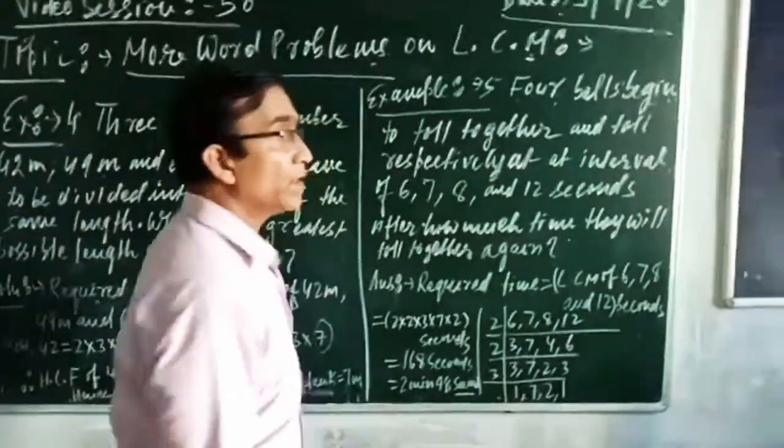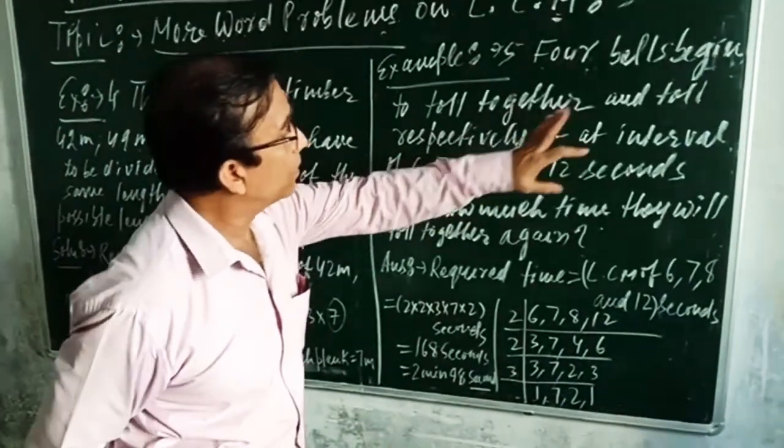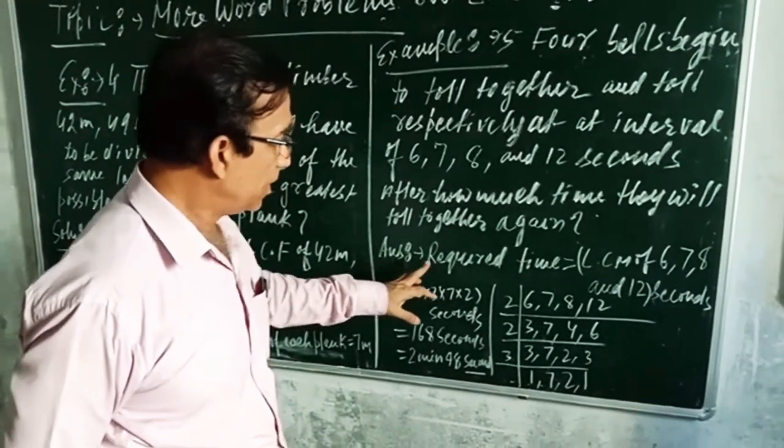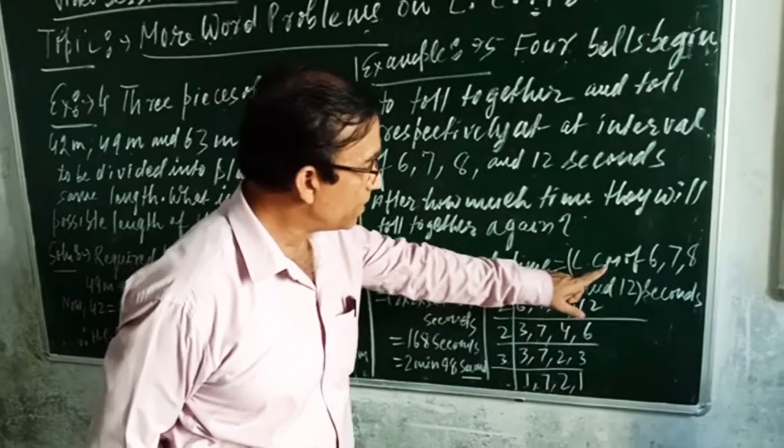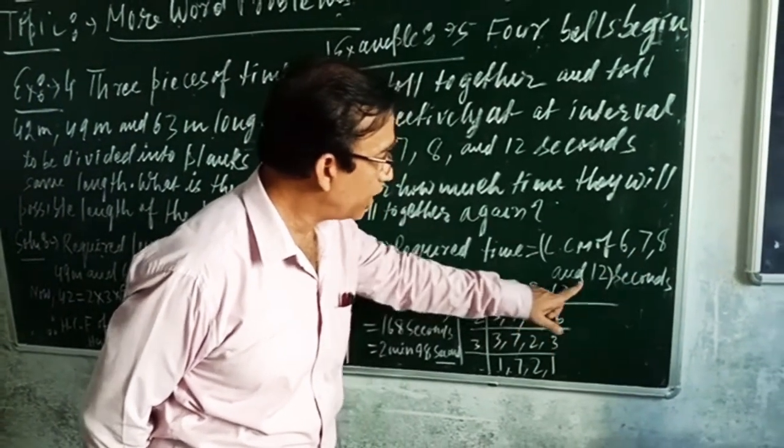Here the question is asking the highest common multiple that will occur for these 4 numbers. So we have to find the LCM. Our answer is, the required time equals LCM of 6, 7, 8 and 12 seconds.